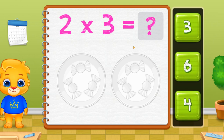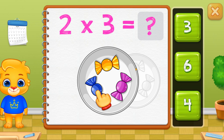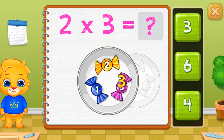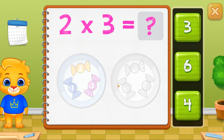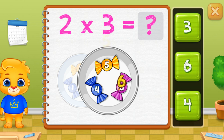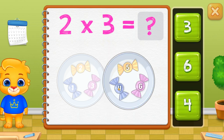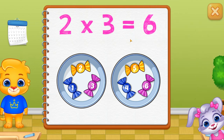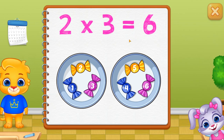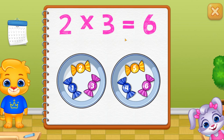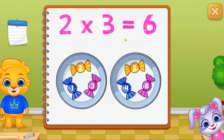Let's learn to multiply using groups. One, two, three, four, five, six. When you multiply, you are adding numbers in groups. Two times three equals six.